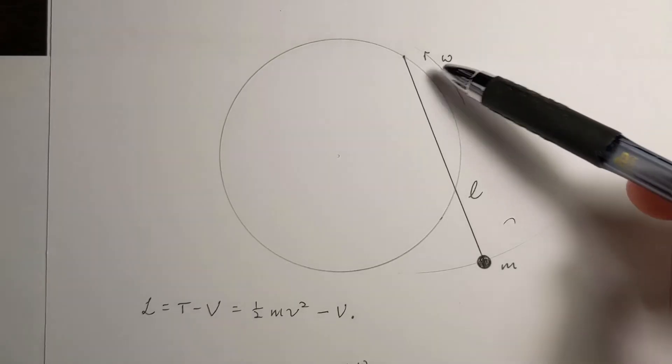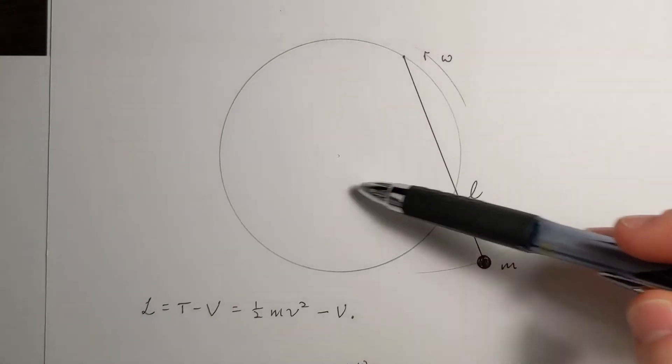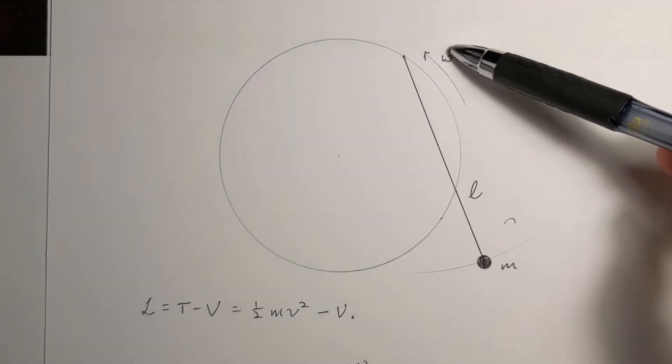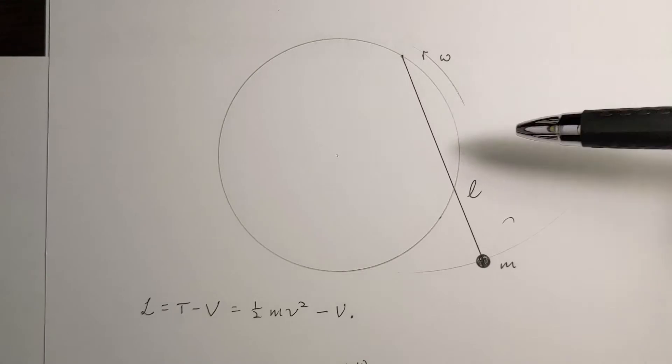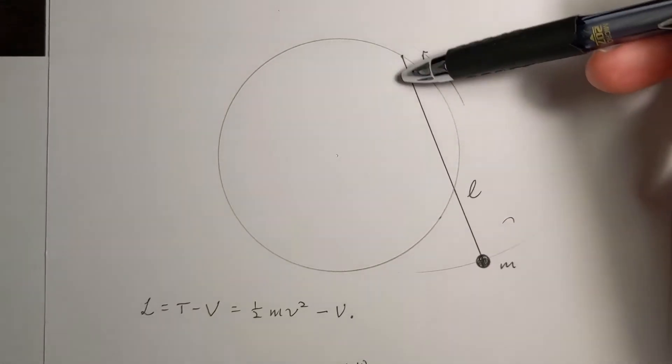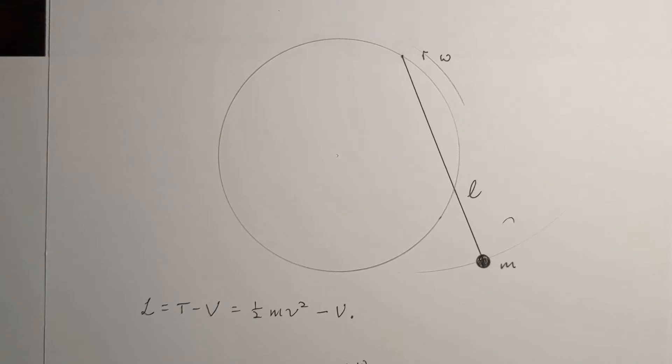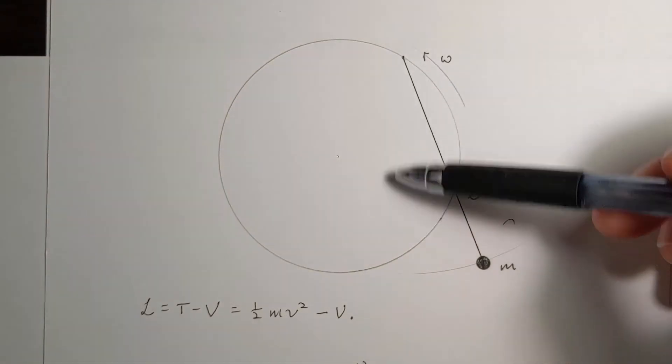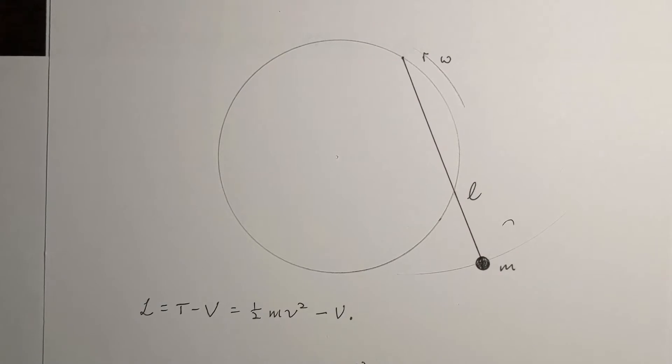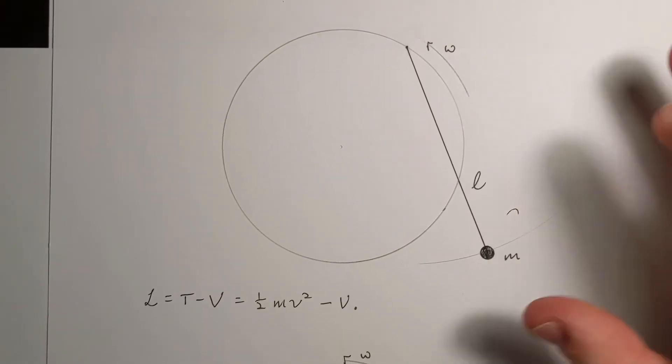So we have a disk which is allowed to rotate about its center with an angular speed of omega, and we have the pendulum of length L and mass M allowed to rotate about the vertical. There's a lot of degrees of freedom here. It might be best to use a Lagrangian approach.